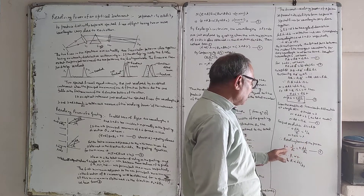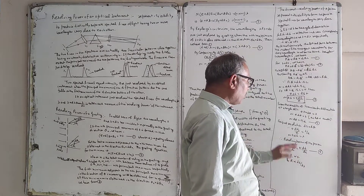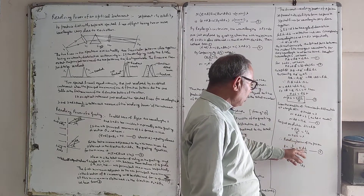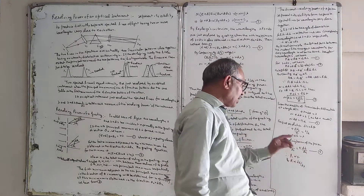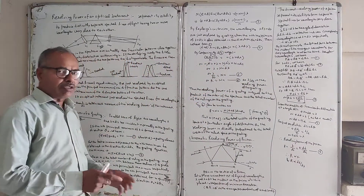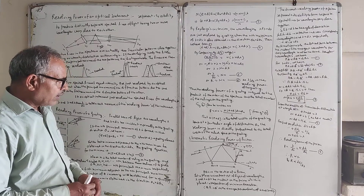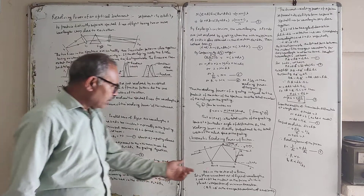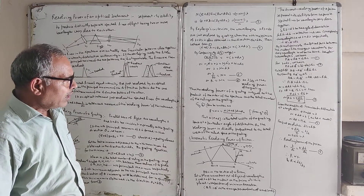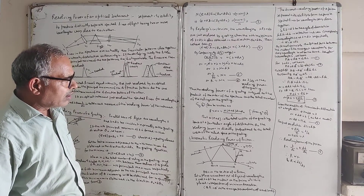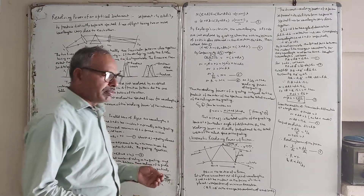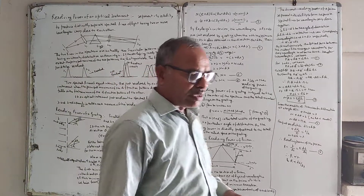Resolving power R equals lambda upon d-lambda, which equals t times d-mu upon d-lambda. Here t is the thickness of the prism. So the resolving power R is equal to t times d-mu upon d-lambda, and R is proportional to d-mu upon d-lambda, which is also related to the dispersive power of the prism. Thank you.